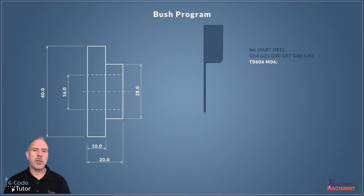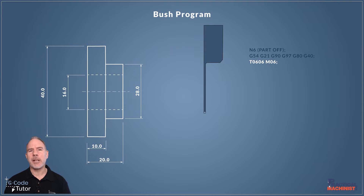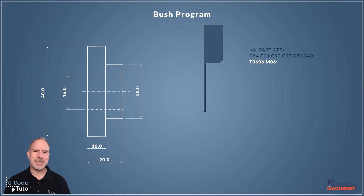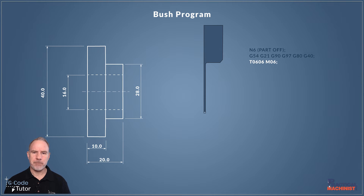Next we need to call the tool — our parting off tool. T0606 calls in tool 6 and our data table offset system 6, so it calls in any information stored on this tool under tool 6. I like to keep the tool number and the data table number the same. M06 is our tool change — this rotates the tool turret and brings our parting off tool down to the zero position.